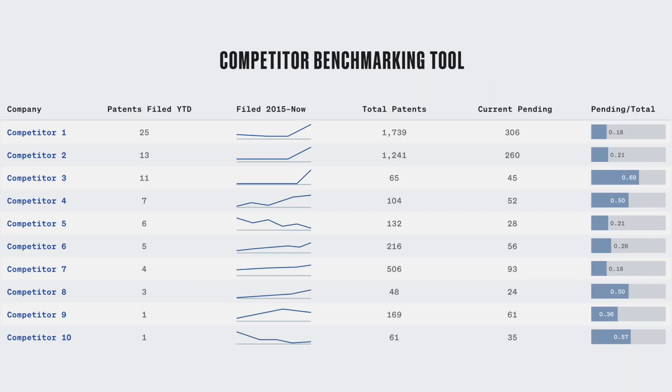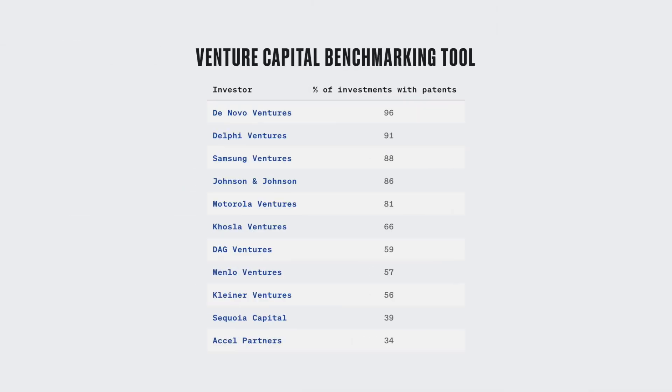Our benchmarking tool helps us figure out what your competitors are doing. If they're filing a lot of patents around what you're doing, you may want to consider filing defensive or counter-assertion type patents. If your competitors are not filing patents, that's something we need to know as well. If you're going to raise outside capital from venture capital firms, our tool looks at a VC firm's portfolio companies and sees what percentage of those companies have patents.